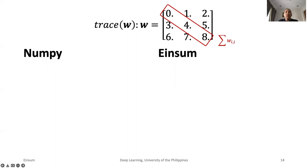What about for the trace of W, which is the sum of all diagonal elements? NumPy uses the trace method. Meanwhile, for EinSum, we simply remove I after the arrow. In this case, it forces EinSum to take the sum of the diagonal elements to make I disappear.